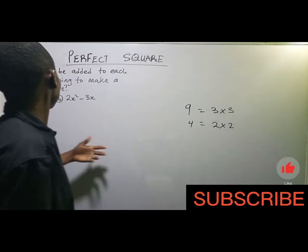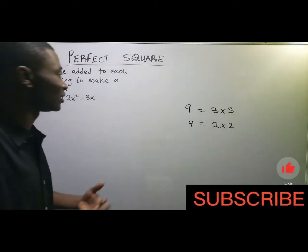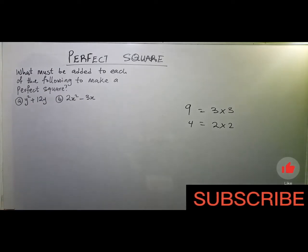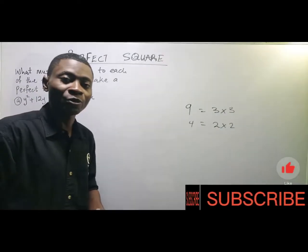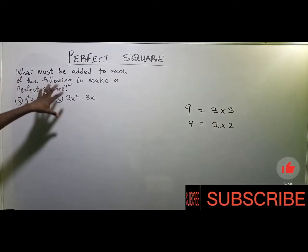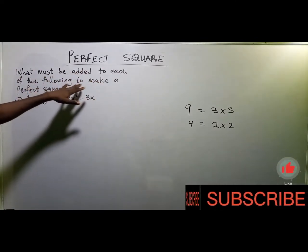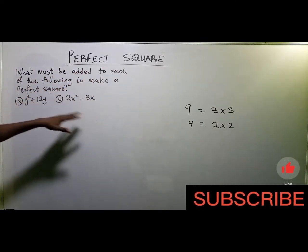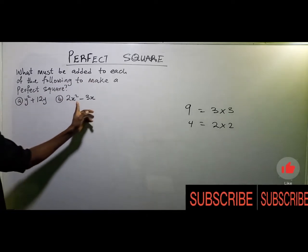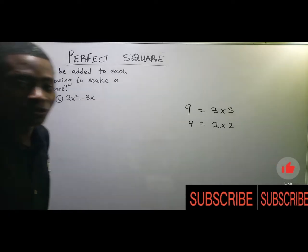When we have an expression like what you're seeing on the board, we can also determine what we can add to these algebraic terms to make them a perfect square. The question here says: what must be added to each of the following to make a perfect square? Here we have (a) y² + 12y, and (b) 2x² − 3x.